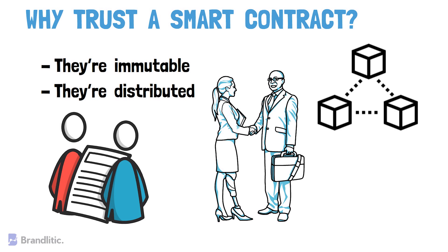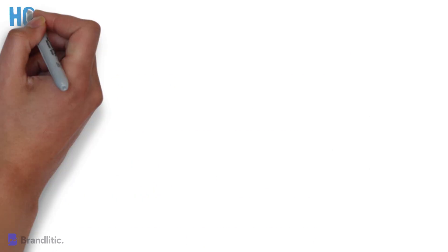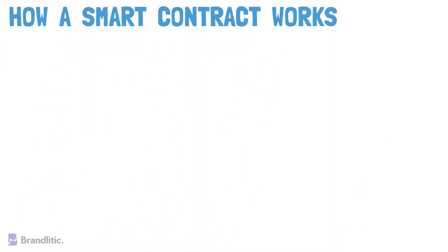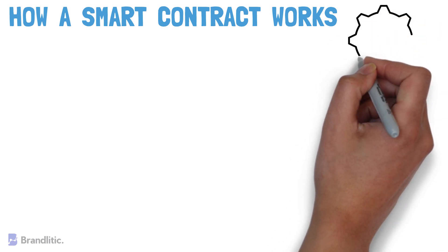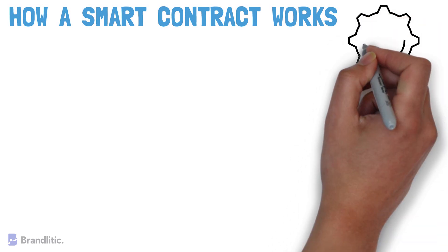Distribution makes it impossible for an attacker to force control to release funds, as all participants would easily detect such an attempt and have the power to mark it as invalid, which will always protect the integrity of the contract. Next, let's discuss how a smart contract works. A smart contract is a program — more simply put, a piece of code.